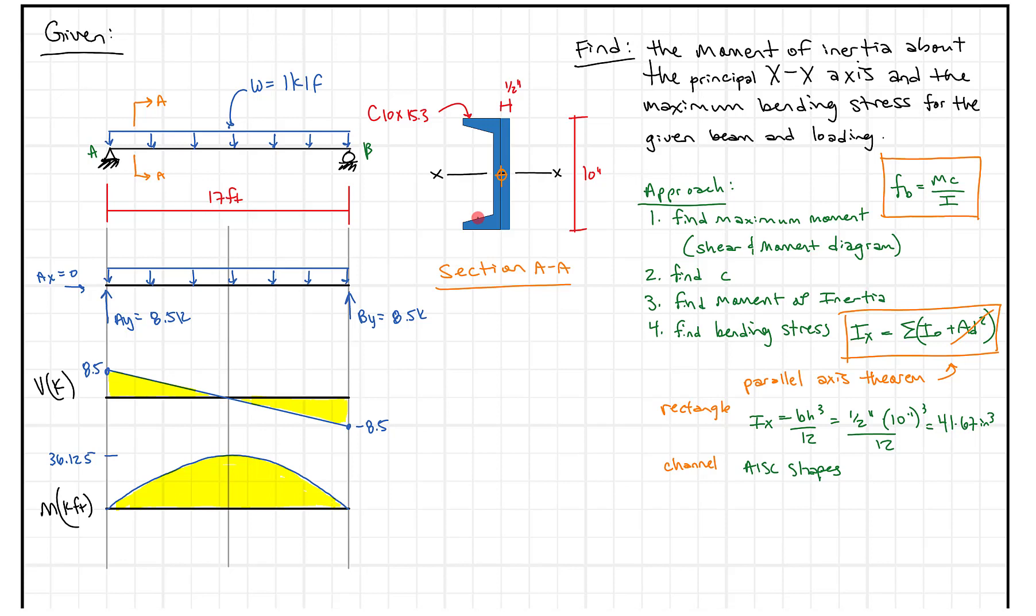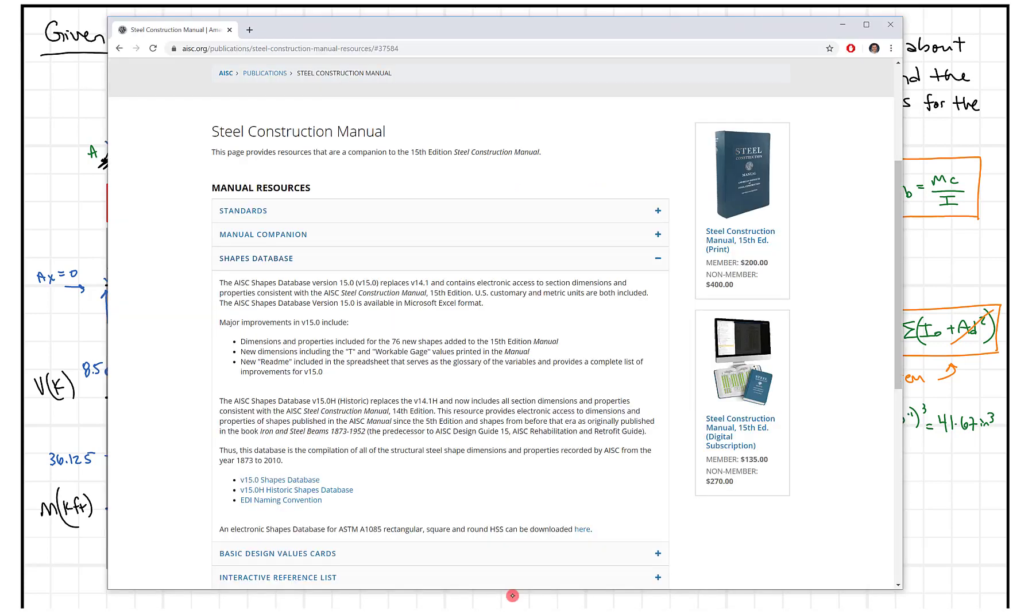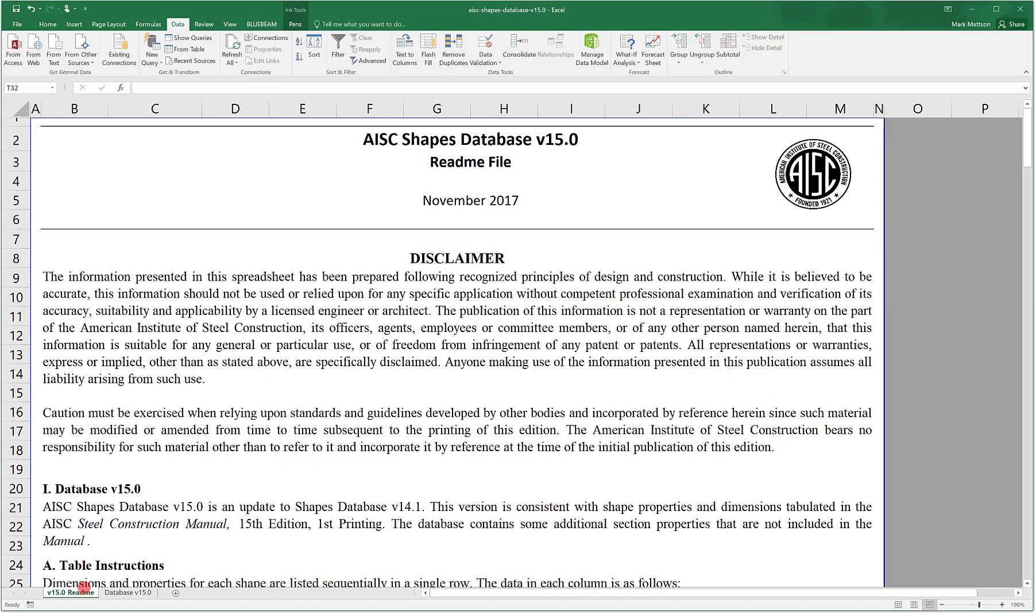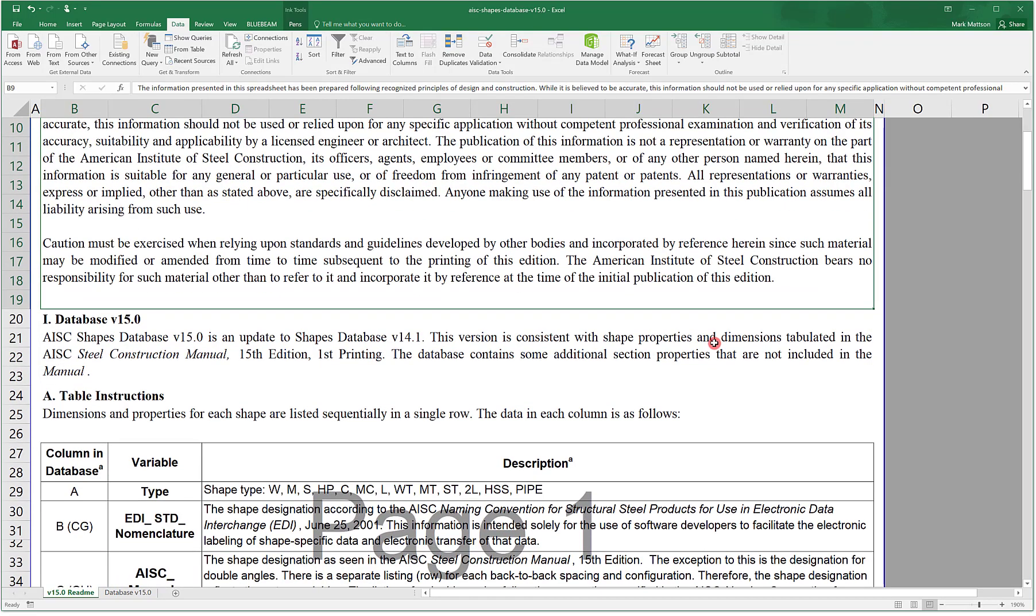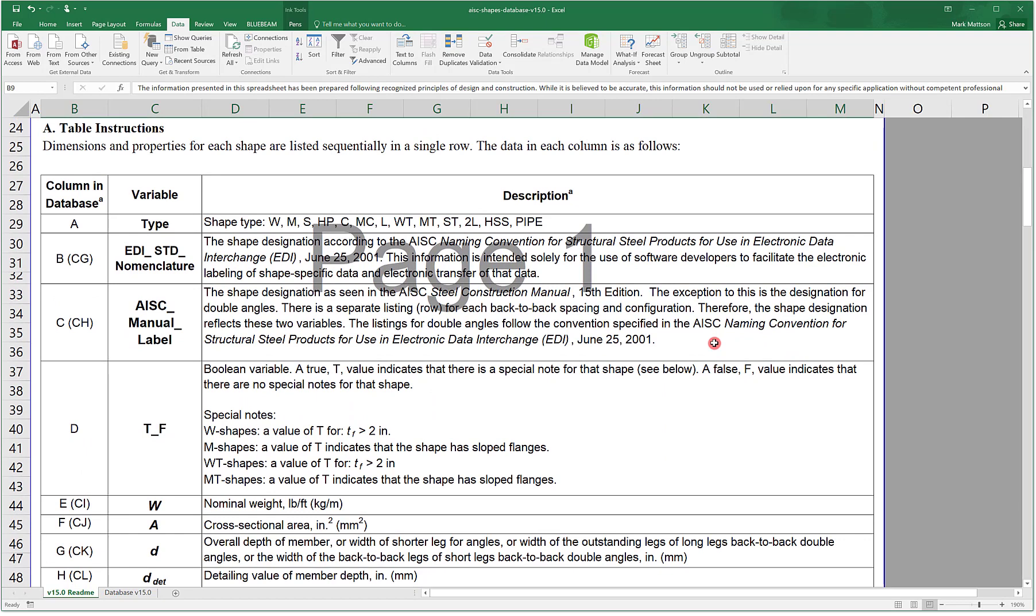So what I can do here is I can pull up the AISC website. At AISC.org publications, I'll post the link below, you have this shapes database. You can click on this and just download the excel sheet. So I've gone ahead and done that and I'll pull it open here. In this shapes database there's a readme file, disclaimer, and all sorts of other information. You can see that there's any channel that's in the AISC table you can go find.